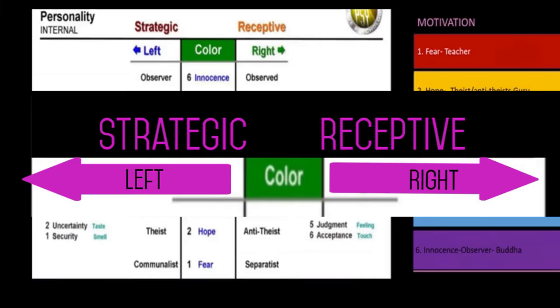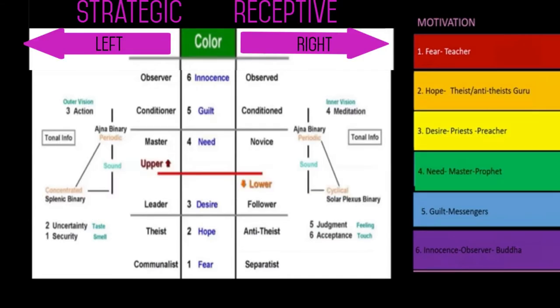When we're looking at the arrows, which is the variable, it takes the diet, the environment, the perception, and the motivation, and pushes them into a little bit of a different way of being. So if you are left, you're more strategic. If you're right, you're more receptive.